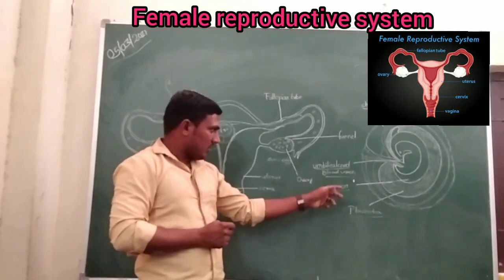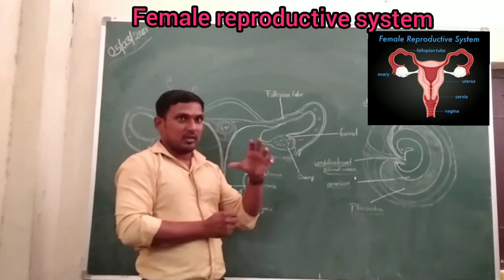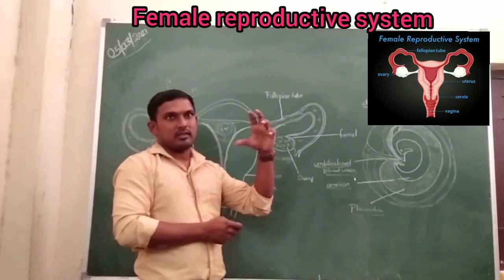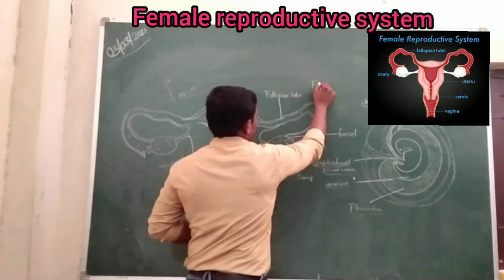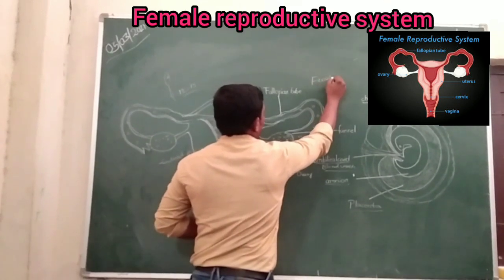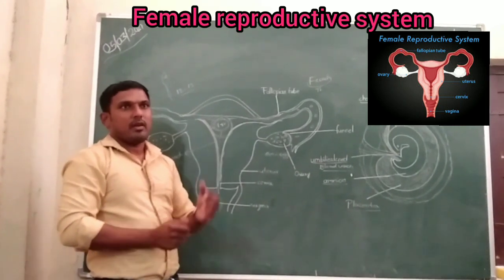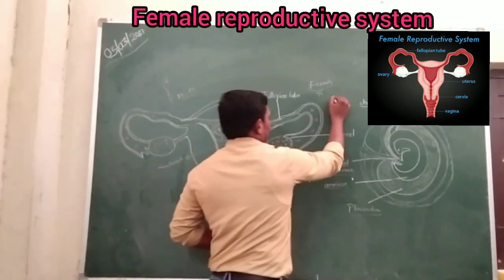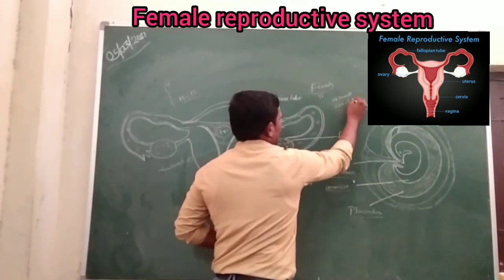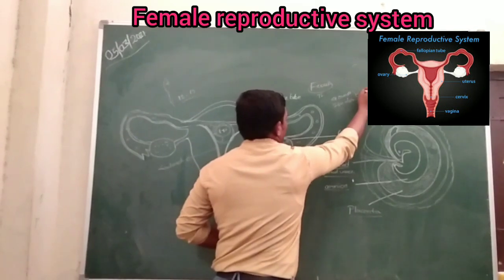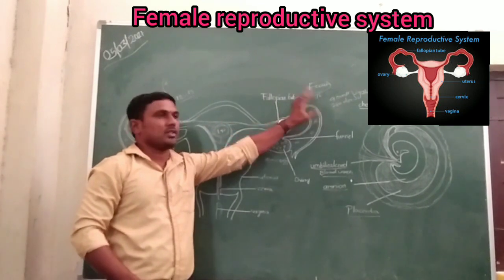The yolk sac has no constant function in mammals. After the third month of pregnancy, the embryo is called a fetus. The mother carries the baby for nine months — this is called the gestation period.